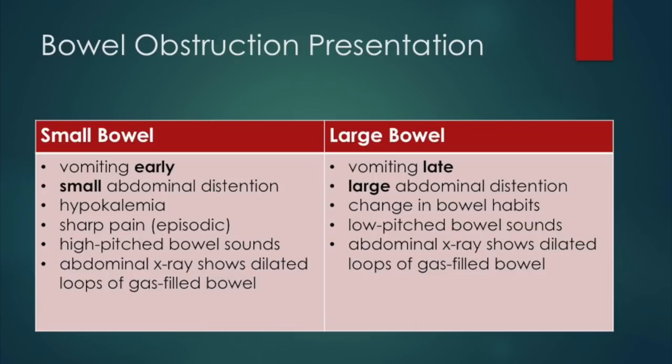In large bowel obstruction, vomiting occurs late and there is a larger amount of abdominal distension, because the blockage is more distal, leaving more gut to distend. You'll also see a change in bowel habits, and you'll auscultate low-pitched bowel sounds instead of high-pitched. The KUB will again show dilated loops of gas-filled bowel.